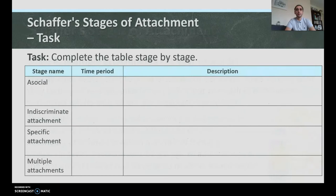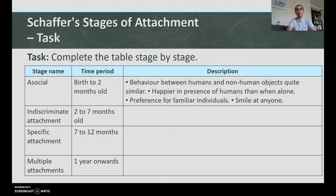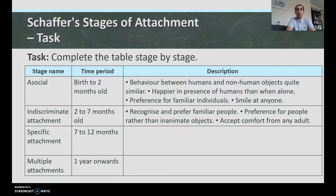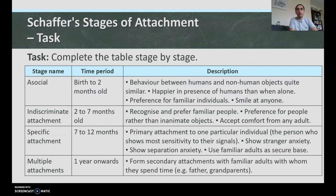Complete the table stage by stage. Asocial stage: birth to two months — behavior towards humans and non-human objects is quite similar, happier in the presence of humans than when alone. Indiscriminate attachment: two to seven months — they recognize and prefer familiar people, smile at everyone, accept comfort from any adult, no separation or stranger anxiety. Specific attachment: seven to twelve months — primary attachment to one individual, most sensitive to their signals, shows stranger and separation anxiety, uses familiar adults as a secure base. Multiple attachment: one year onwards — secondary attachments with familiar adults such as father, grandparents.